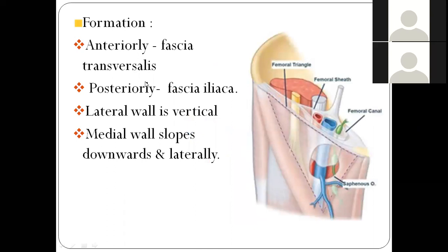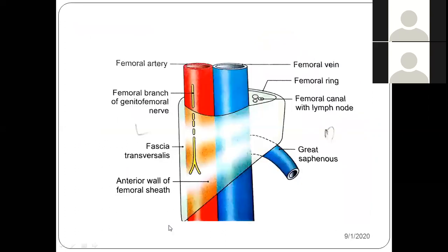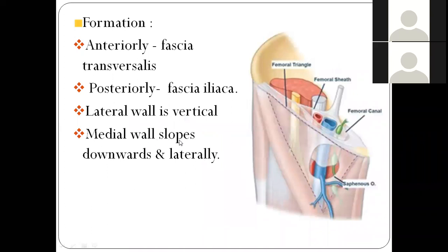The formation: the anterior contribution comes from fascia transversalis, and the posterior contribution comes from the covering of the iliacus muscle, which is the fascia iliaca. The lateral wall is vertical, whereas the medial wall slopes downwards and laterally.